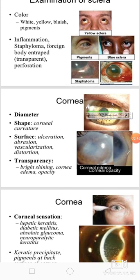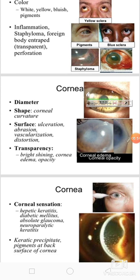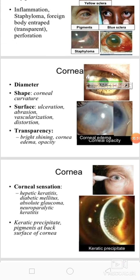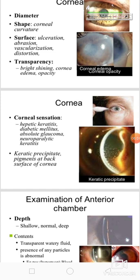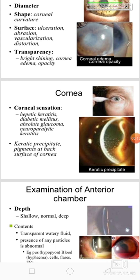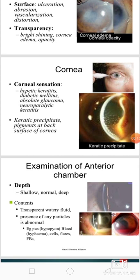Then we should do the examination of the cornea. We should examine the diameter, shape, surface, and transparency of the cornea. We should also see the corneal sensation — the cornea is a very sensitive structure and its sensitivity is decreased in case of herpetic keratitis, diabetic mellitus, absolute glaucoma, and neuroparalytic keratitis. We should also examine keratic precipitates and pigments at the back or surface of the cornea.